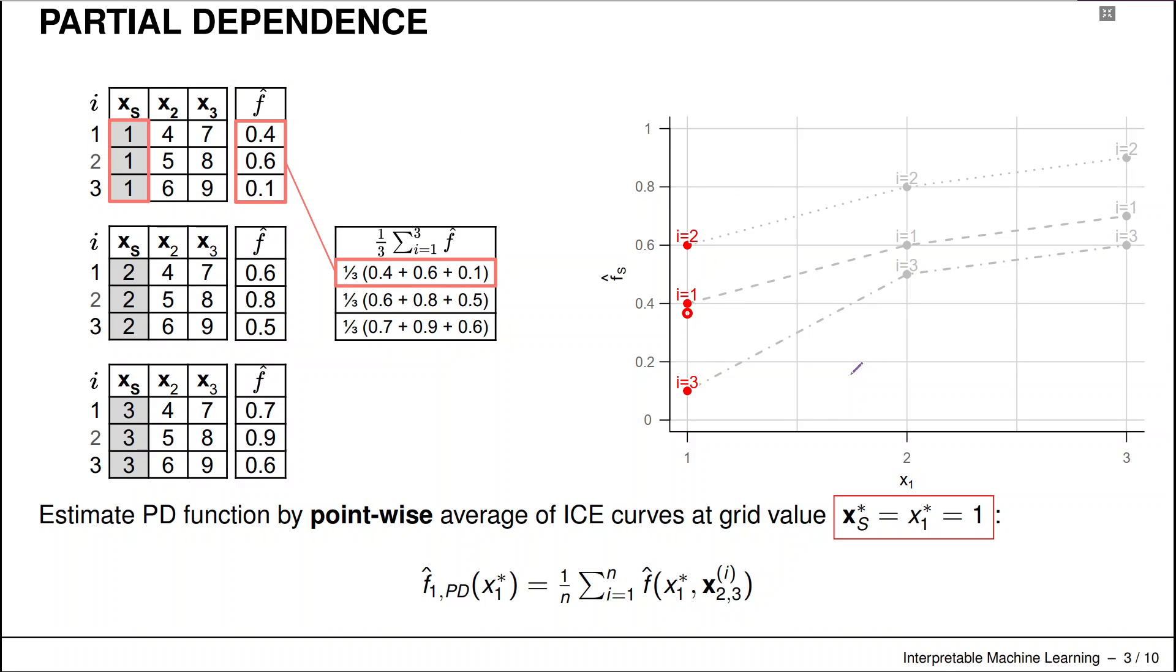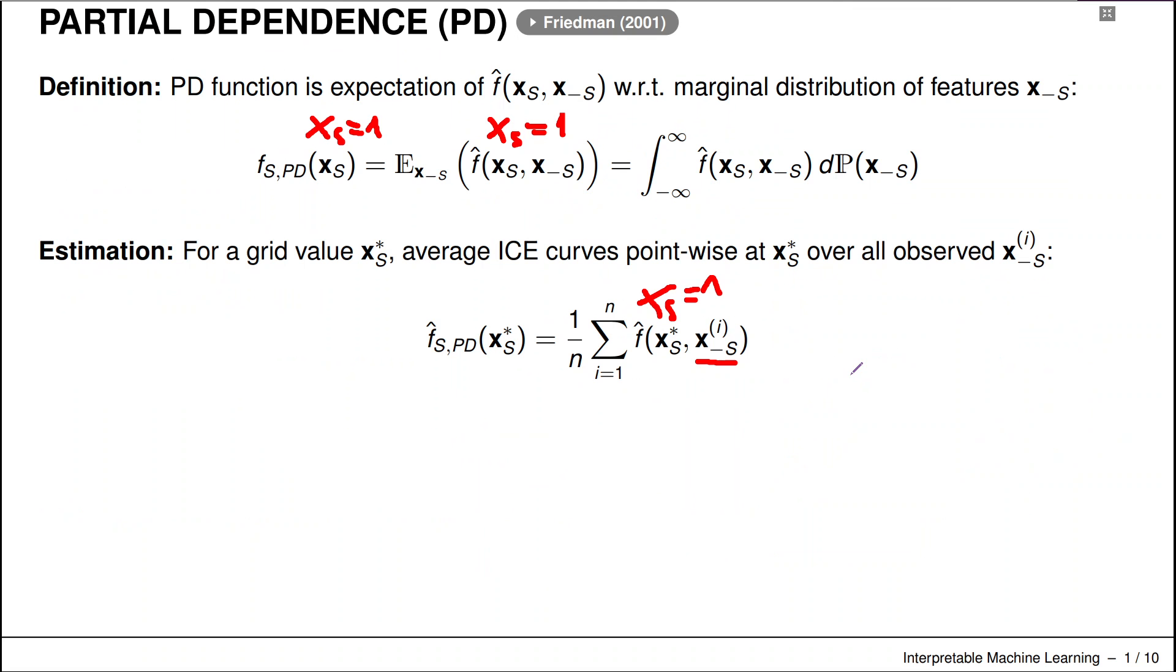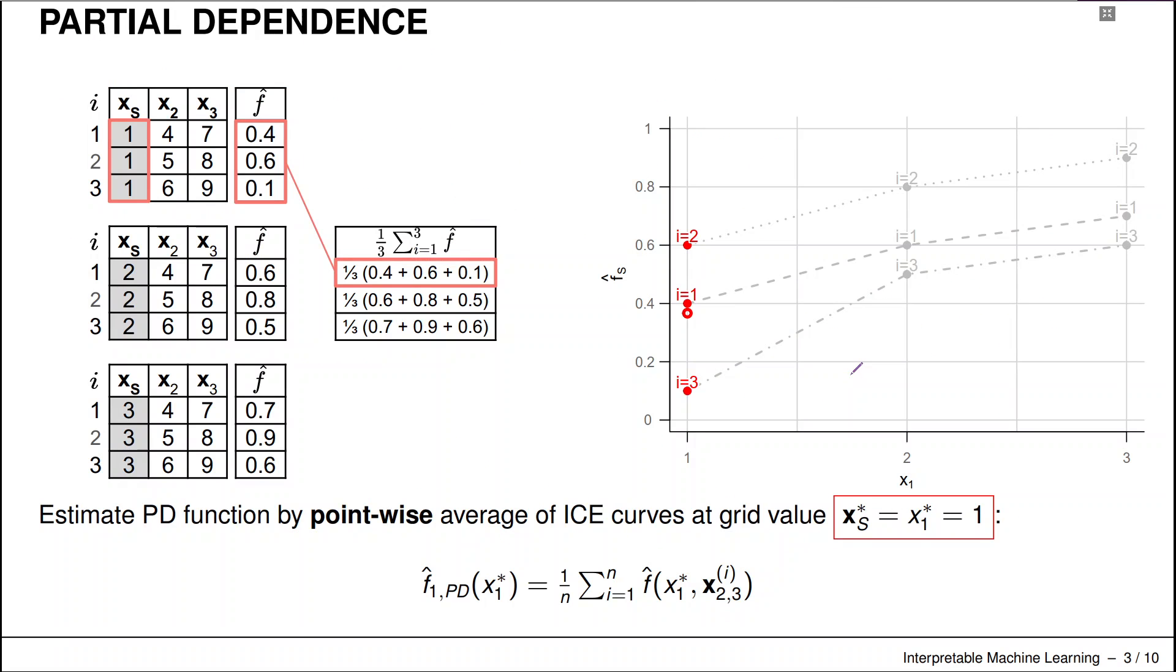We can now take a somewhat deeper look at how partial dependence plots can be computed. So the estimation of the partial dependence, how this is computed in practice on data. So this is simply a point-wise average of ICE curves at the given grid values. You might have guessed that already from the initial definition, but I hope you remember how we computed the ICE curves in the session on ICE curves.